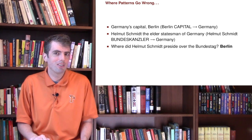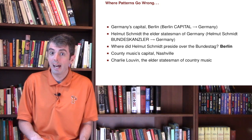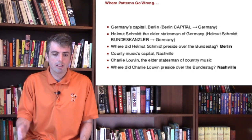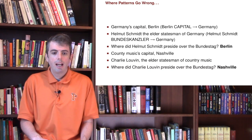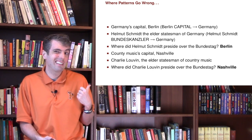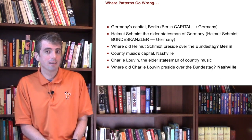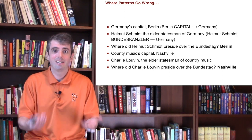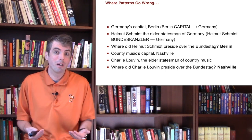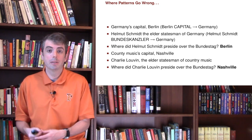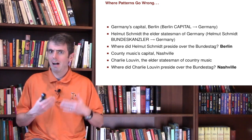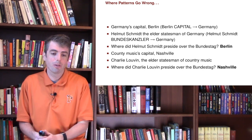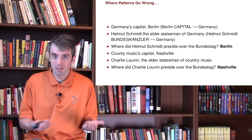But now we apply these relations elsewhere. 'Country's music capital is Nashville' — we see that in a piece of text — and 'Charlie Lovin, the elder statesman of country music.' So then we can answer: where did Charlie Lovin preside over the Bundestag? Nashville. These two questions we actually answered incorrectly. Helmut Schmidt was indeed the Bundeskanzler of Germany, but he presided over the Bundestag in Bonn, not Berlin. These systems don't have a great sense for temporal dynamics — is a fact always true, or when was it true? There's no higher-order reasoning about how true something is, even if it's been attested in our knowledge base. And we can go totally astray for questions like Charlie Lovin — the Bundestag has never been in Nashville.